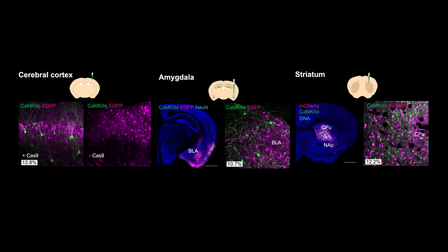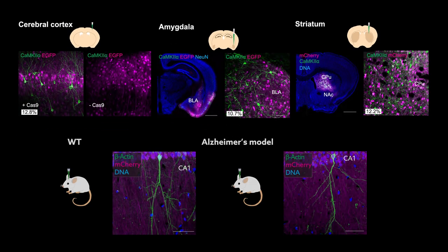Finally, the team tested the dual-viral system in living mice, including an aged Alzheimer's disease mouse model, by directly injecting AAVs into the brain.